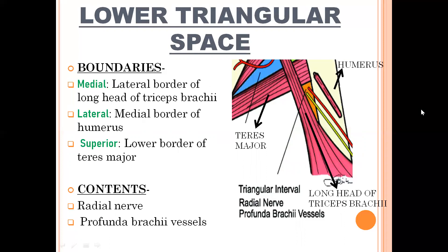The third and last space is the lower triangular space. It has three boundaries. Medial: lateral border of long head of triceps brachii. Lateral: medial border of humerus. Superior: lower border of teres major. Contents: radial nerve and profunda brachii vessels. The radial nerve is a branch of the posterior cord of brachial plexus, and the profunda brachii artery is a branch of the brachial artery. Teres major forms the superior boundary, long head of triceps brachii the medial boundary, and humerus the lateral boundary.